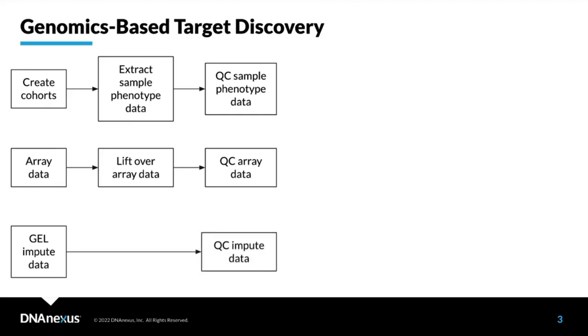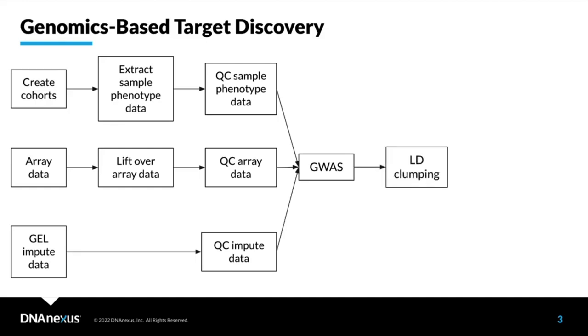You can use either TOPMed imputed data, original imputed data, whole exome sequencing, or soon there will be a release of whole genome sequencing 200k PGEN files. In our case we'll use imputed data. Once we have all three types of data cleaned, we'll do GWAS using the REGENIE package, then aggregate results and select the most informative variants using linkage disequilibrium clumping.